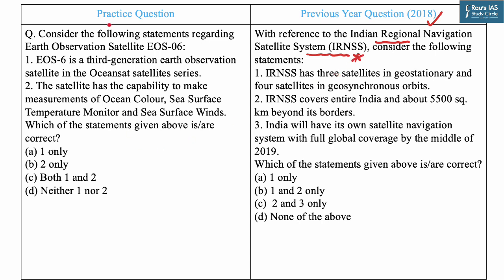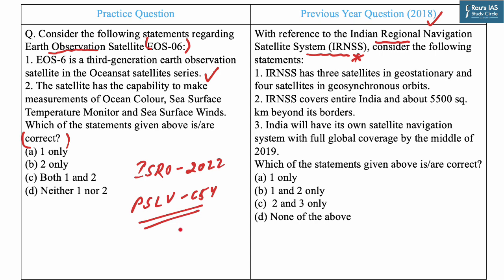Today's first practice question says: consider the following statements regarding Earth Observation Satellite EOS-06 and identify the correct statements. Statement one says EOS-06 is a third generation Earth observation satellite in the OceanSat satellite series. This is a correct statement. EOS-06 is indeed a third generation satellite in this series, launched by ISRO in the year 2022 on board PSLV-C54 rocket.